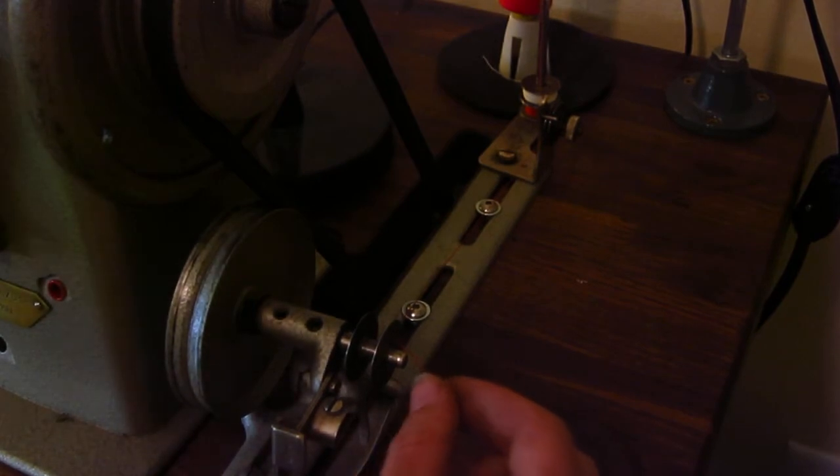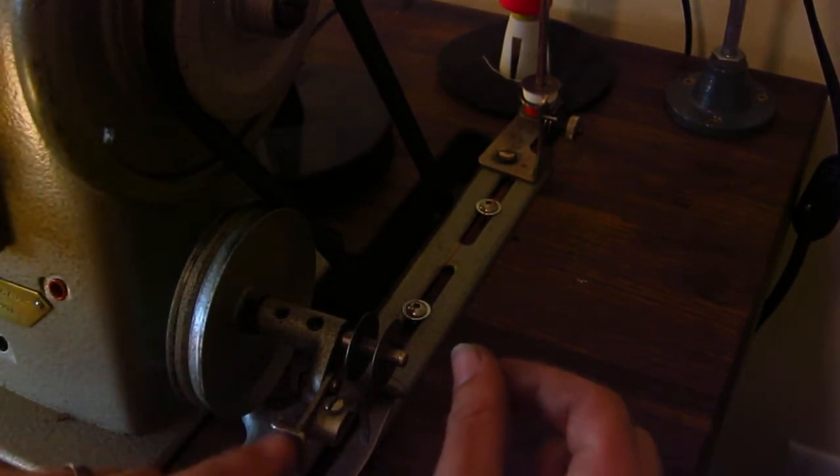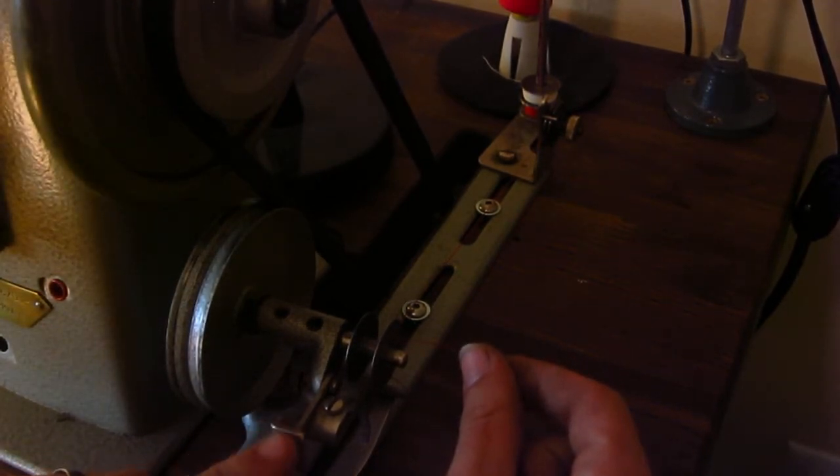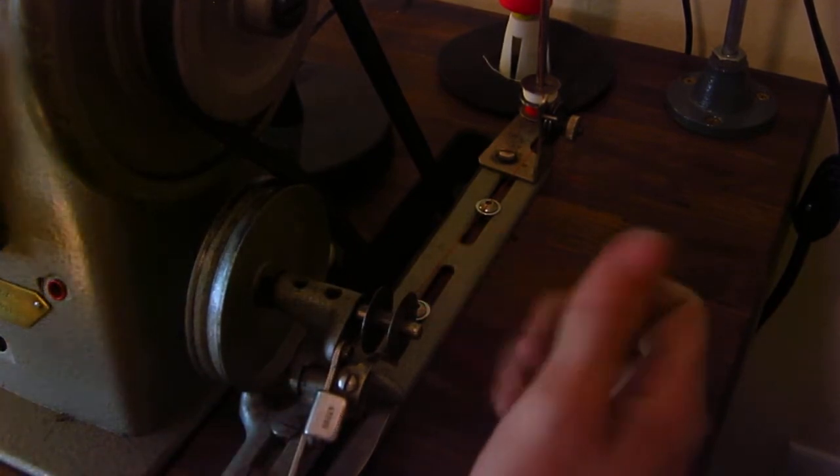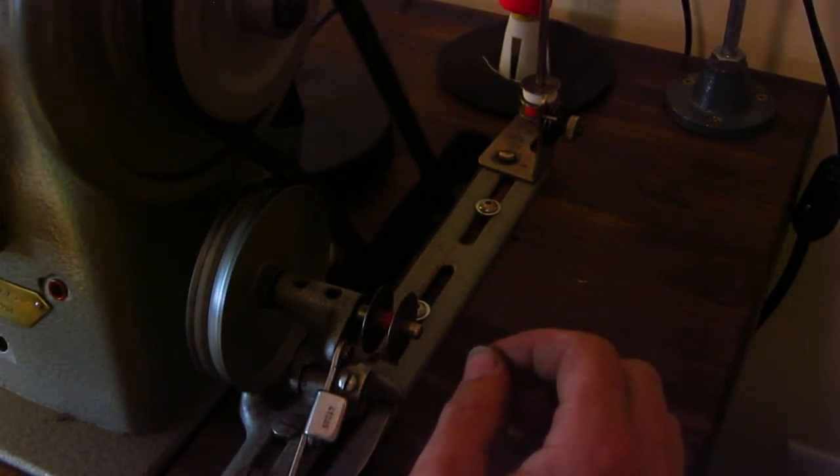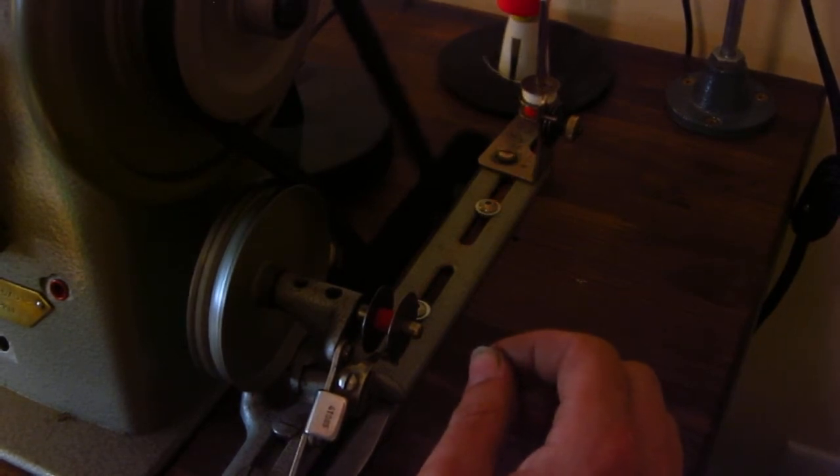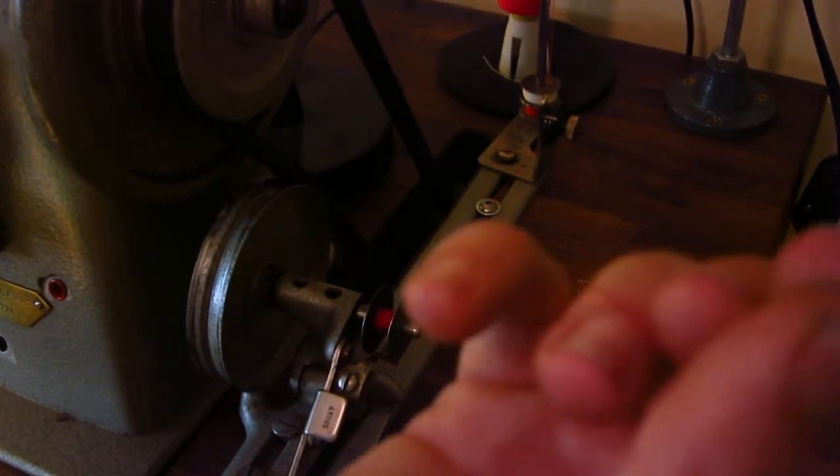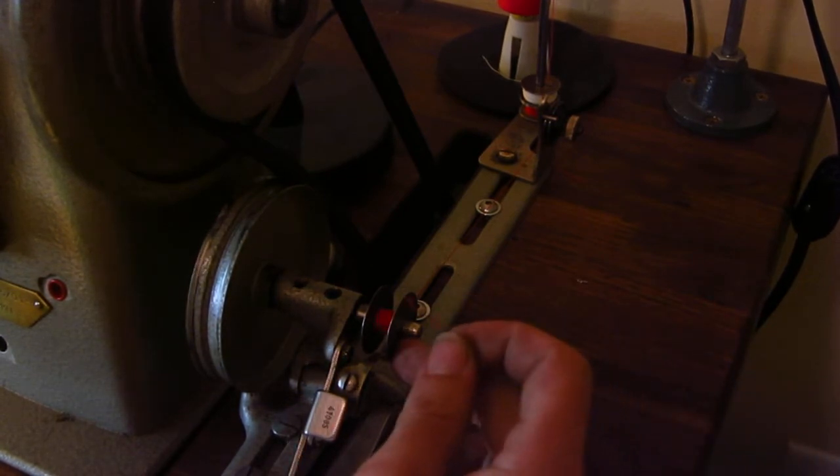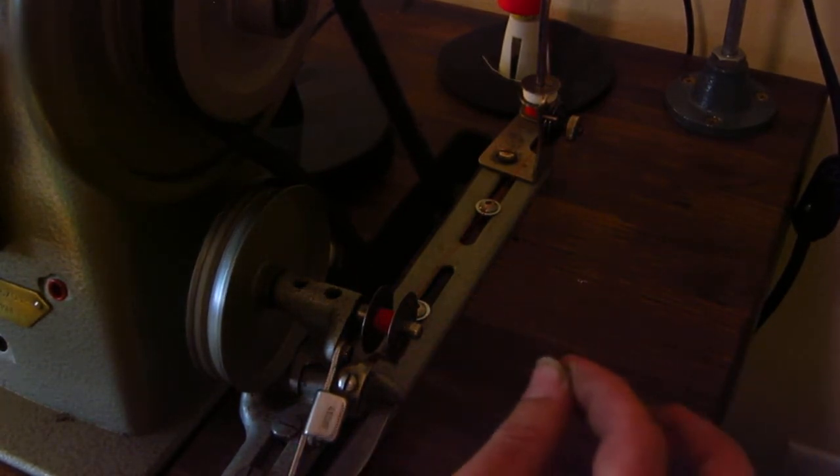Lift up your presser foot on the machine so it doesn't thump as you're going. You're going to push the thing in and then just... Give it about two passes and then either it'll break off or you can cut it. And then you just keep winding.